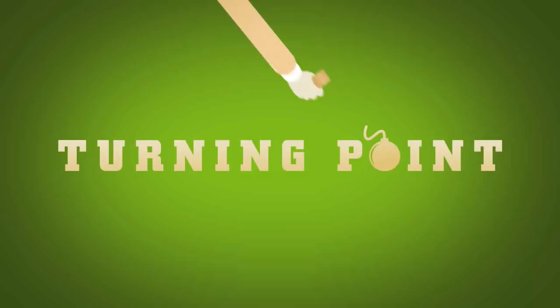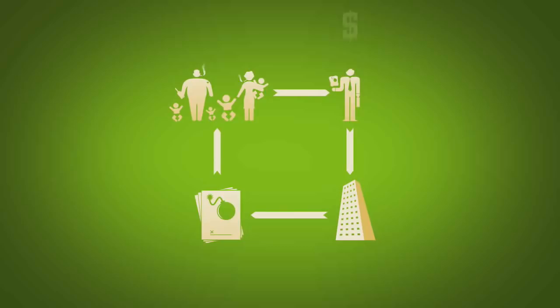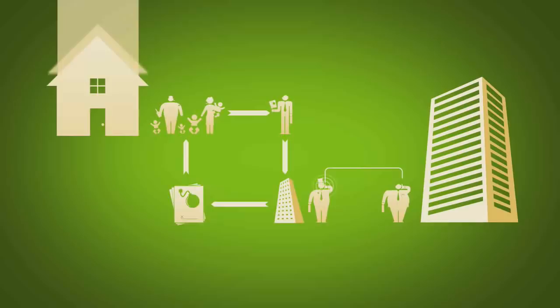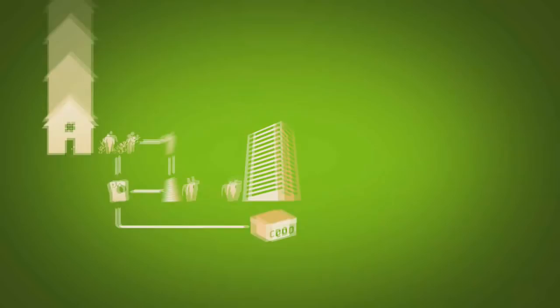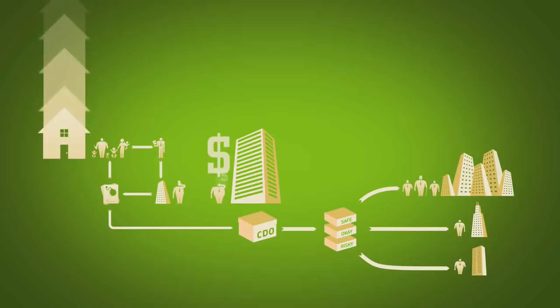So just like always, the mortgage broker connects the family with a lender and a mortgage, making his commission. The family buys a big house. The lender sells the mortgage to the investment banker, who turns it into a CDO and sells slices to the investors and others. This actually works out nicely for everyone and makes them all rich.